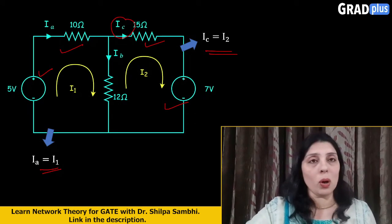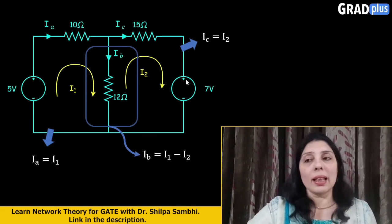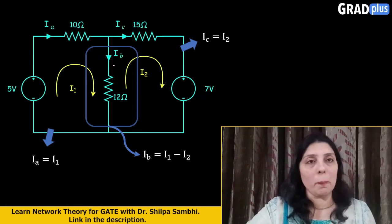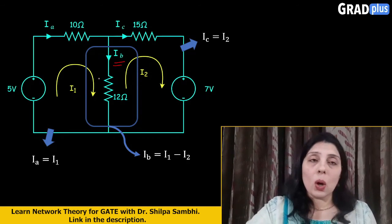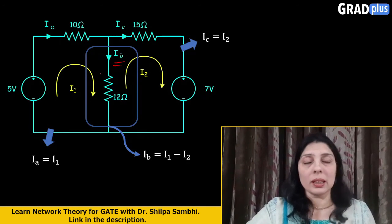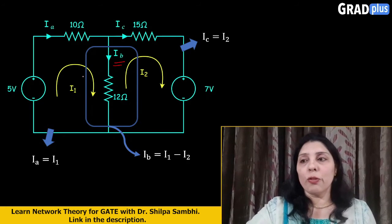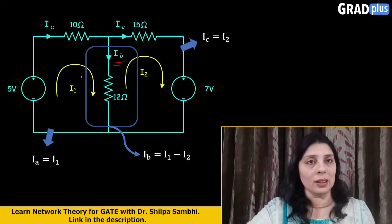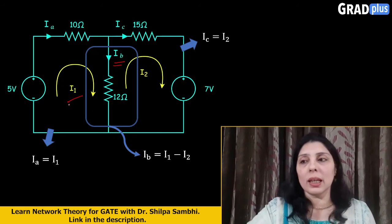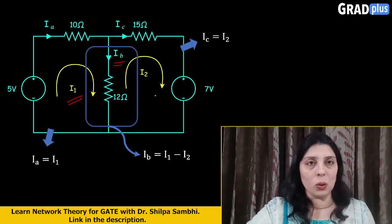Now there is one more branch current which is left and that is the middle branch which is represented by Ib here. Now this Ib is experiencing both the loop currents. From the left hand side loop, it is experiencing the current I1. From the right hand side loop, it is experiencing the current I2.